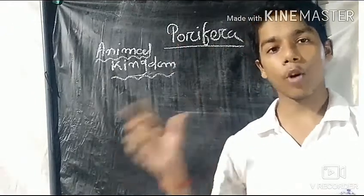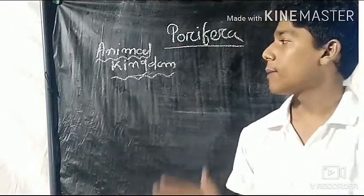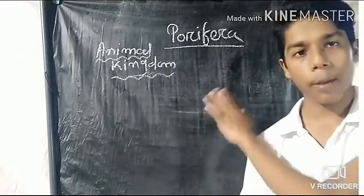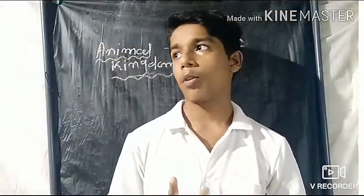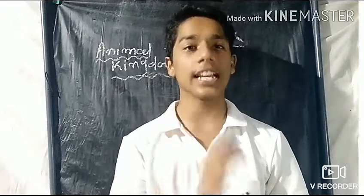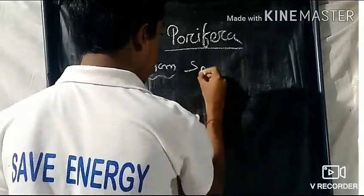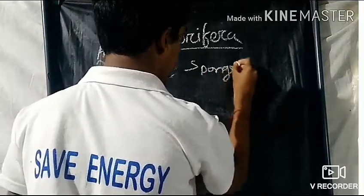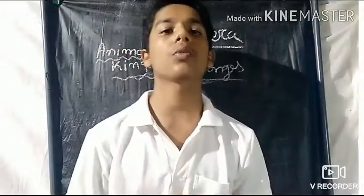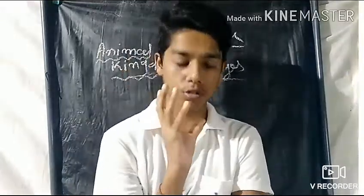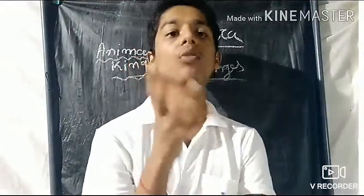We are starting a big important topic: Animal Kingdom. We have reached Porifera. Porifera is called Spongy Animals, or Sponges, because you can see all the sponges.